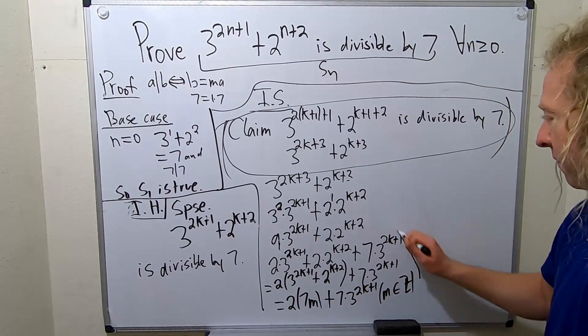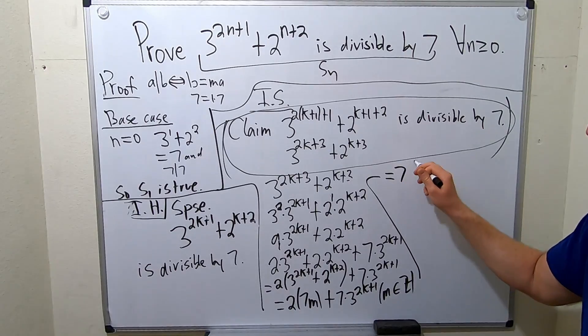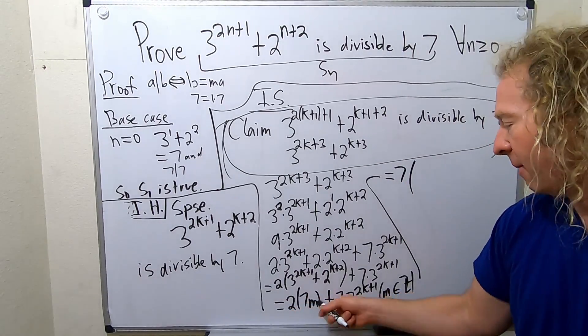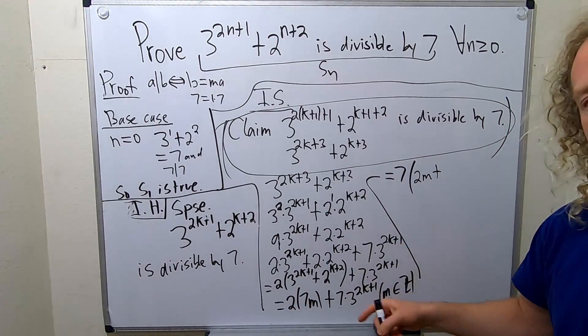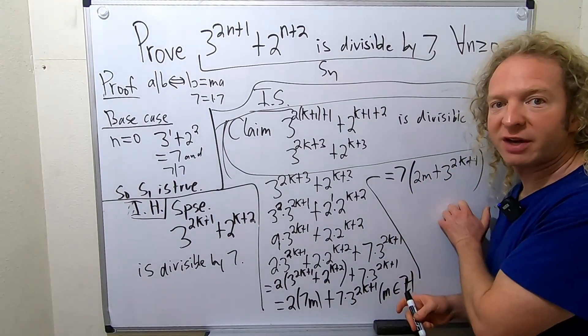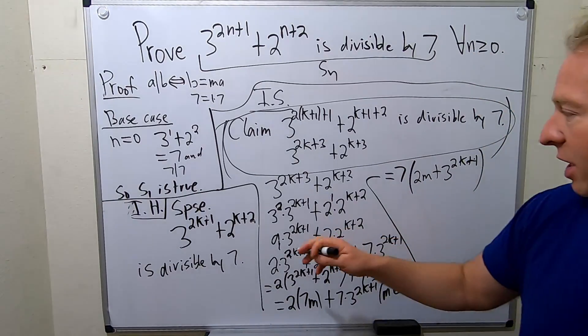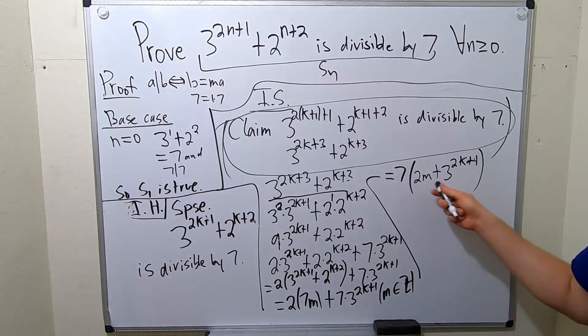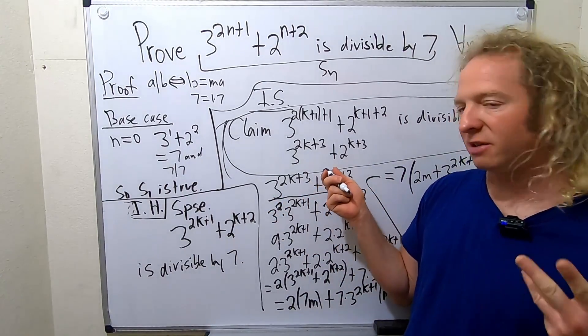Now you can pull out the 7. So 7, this will be 2m plus 3 to the 2k plus 1. Oh, this is so cool. It worked. I'm so happy it worked. So this is a multiple of 7, right? So we showed that this bad boy is a multiple of 7. So that means that this is divisible by 7.